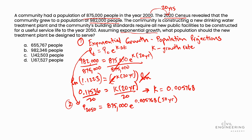Be careful — we see a lot of students get tripped up by this. You know this potential stumbling block, so be careful. Performing the calculation, we determine that the population at 2050 is equal to 1,167,576 people. Looking at the answer choices, that is closest to answer choice D. We've successfully solved this problem.